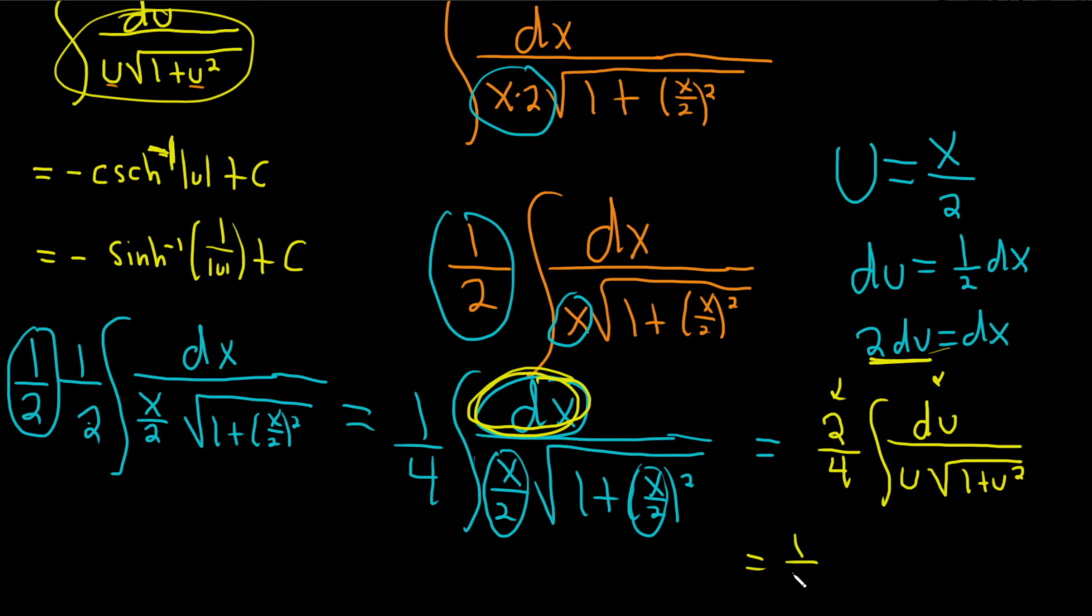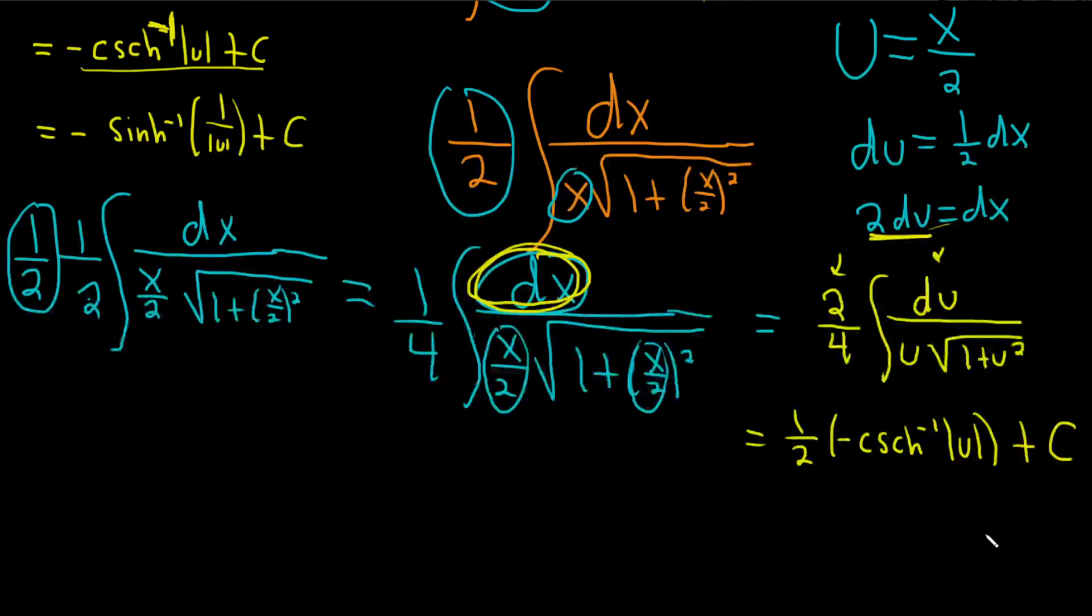And let's use this one. So this is negative. And then we have the inverse of the hyperbolic cosecant of the absolute value of u plus c. So this is going to be equal to negative 1 half, the inverse of the hyperbolic cosecant of the absolute value of x over 2. That's a negative 1 there. Plus c. That would be one acceptable answer.